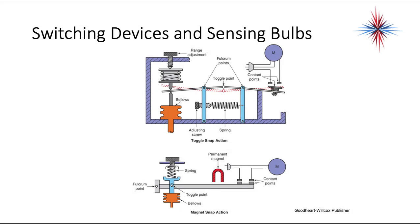This is a switching device using sensing bulbs. We have the bellows, a range adjustment which is a spring that allows the difference in the toggle point, and we are either opening or closing a contact point. That's a toggle snap action. We can also use a permanent magnet to help attract and snap the contacts so they don't bounce, giving them a little bit of holding force.